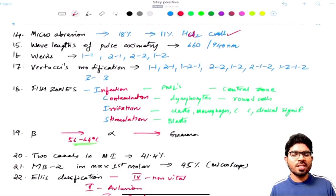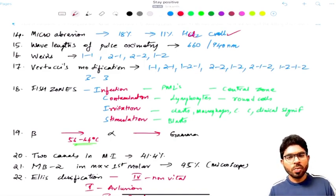Next is Weine's root canal modification, which is a very familiar question that is frequently asked in the exams. Type 1 is 1-1, type 2 is 2-1, type 3 is 2-2, type 4 is 1-2. Do make a note, this is very important. And later it is being modified by Vertucci, which has divided into 8. That is 1-1, 2-1, 1-2-1, 2-2, 1-2, 2-1-2, 1-2-1-2 and 3 and 3. 3 and 3 is 8.